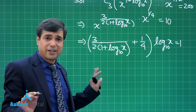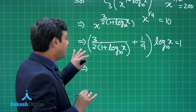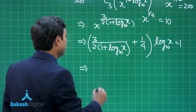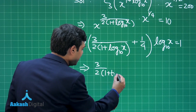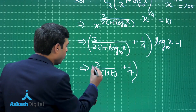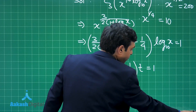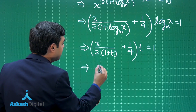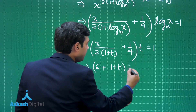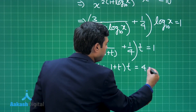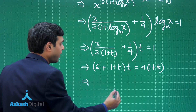Let us say log x is t, so that things are easier. Taking log x as t and further taking LCM, we get: 3/2 times (1 + t) plus 1/4 times t is equal to 1. Taking LCM further we get 6 plus (1 + t) whole multiplied by t is equal to 4 times (1 + t).